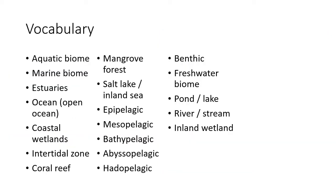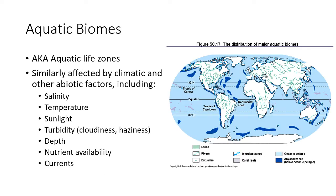Here's the vocab if you want to copy this down. Just like we had temperature and precipitation, as well as elevation and altitude being the principal abiotic factors that influence terrestrial biomes, aquatic biomes have their own set of abiotic factors. Number one is salinity, then temperature, sunlight, turbidity, depth, nutrient availability, and the predominant currents of that area.